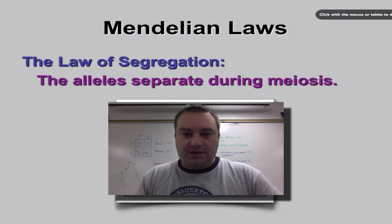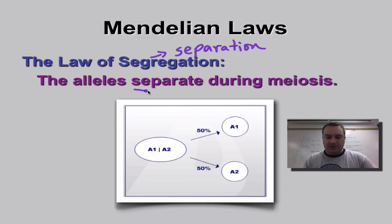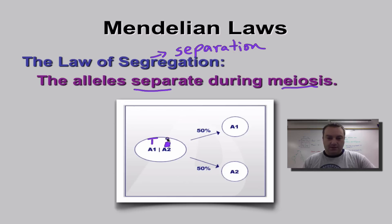When it comes to segregation, all you need to remember is that segregation simply means separation. What it means is that the alleles will separate during meiosis. As we can see in this picture, we have allele number one — a big T — and allele number two — a little t. So this individual is heterozygous, and when it makes gametes, half will get a big T and the other half will get a little t.